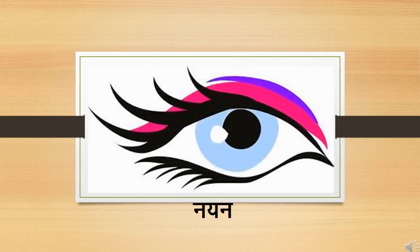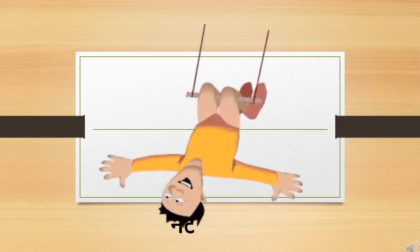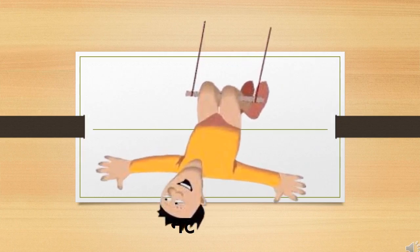Na say Nayan. Na say Nayan. In English, we call it an eye. Na say Nut. Na say Nut. In English, we call it acrobat. You must have seen it in the circus.